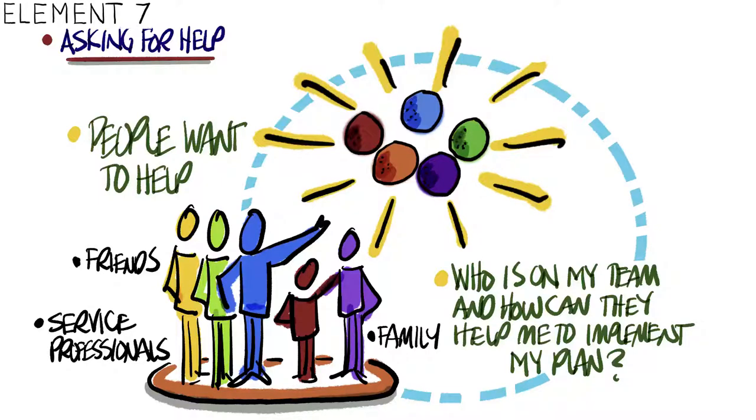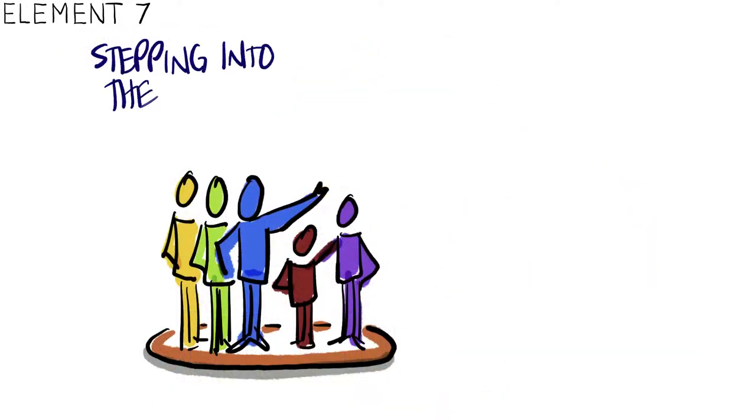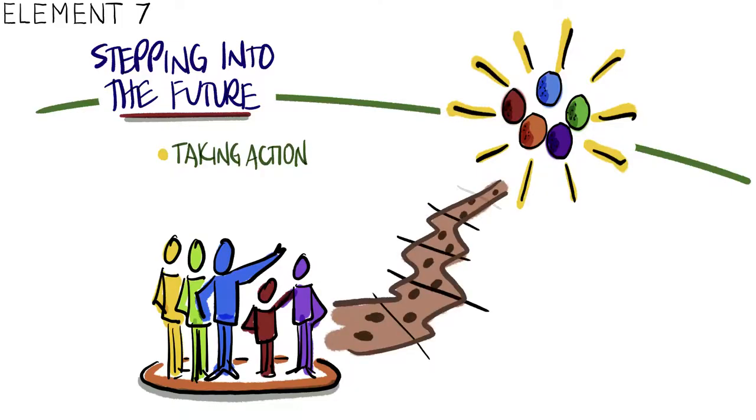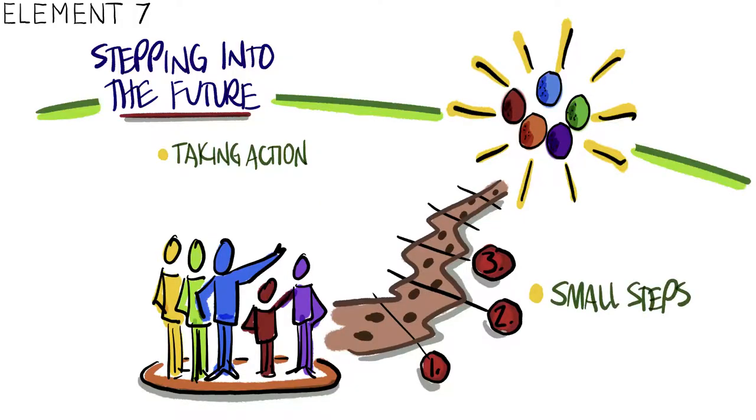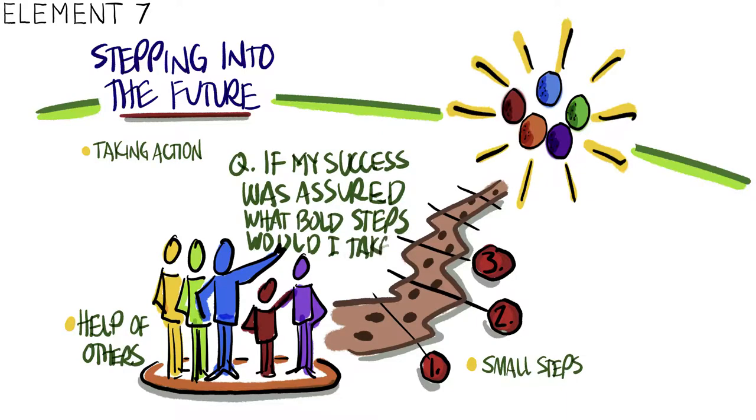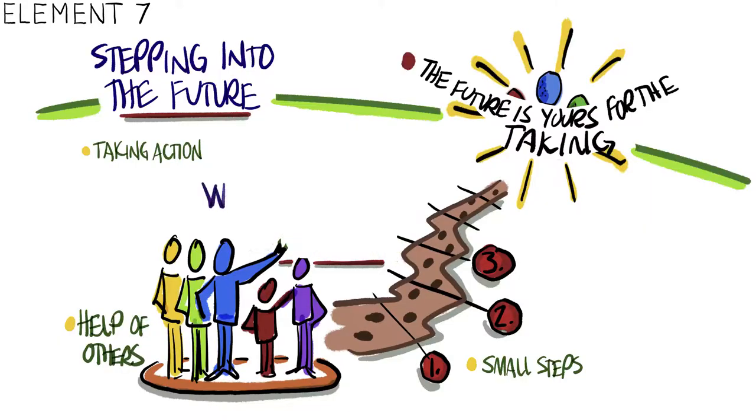Our seventh and final element is stepping into the future. Taking action on what we want in life is the only way to fully realize that life. But you don't have to do it all at once. Take small steps that connect directly with your future. Seek the help of others. Don't give up even when it becomes difficult. That is part of the reward of making your own life the one you truly want. In preparing to take the first step, ask, if my success was assured, what bold steps would I take? The future is yours for the taking. What are you waiting for?